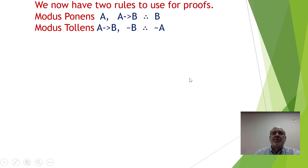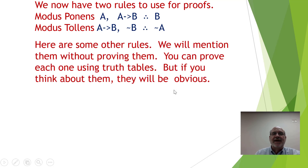So we have two valid rules we can now use for our proofs: modus ponens — A, A implies B, therefore B — and modus tollens — A implies B, not B, therefore not A. Now here are some other rules; we'll mention them without proving them, but you can prove each one using truth tables.